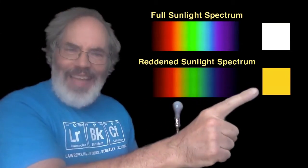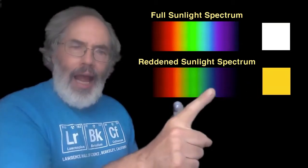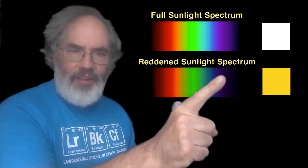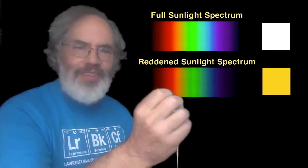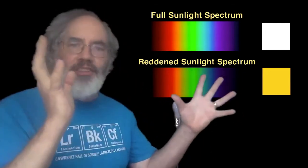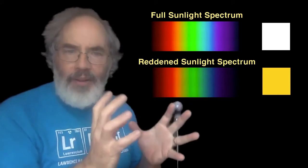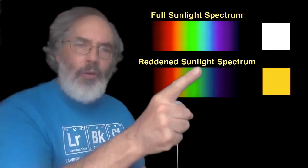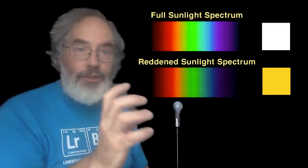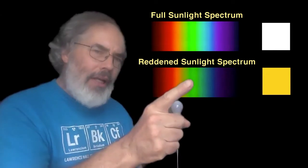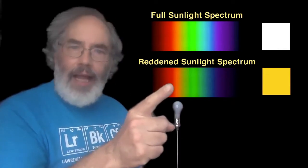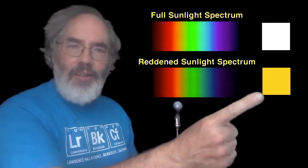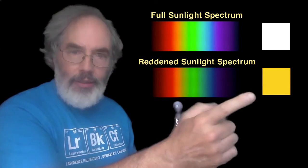The light looks yellower, and the spectrum shows that the purple parts of the light are missing. That light was sent in another direction by the particles in a process called scattering. Most of the blue light was scattered away too. A lot of the green light and the red light made it through, and so the resulting light was much yellower.